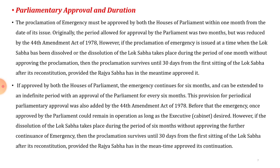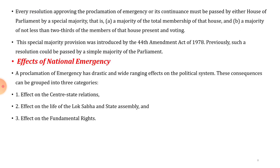If the dissolution of Lok Sabha takes place during the period of six months without approving the further continuance of the emergency, then the proclamation survives until 30 days from the first sitting of the Lok Sabha after its reconstitution, provided the Rajya Sabha has in the meantime approved its continuation. Every resolution approving the proclamation or its continuance must be passed by either house by a special majority — that is, a majority of the total membership of that house and a majority of not less than two-thirds of the members present and voting. This special majority provision was introduced by the 44th Amendment Act of 1978; previously such resolution could be passed by a simple majority.